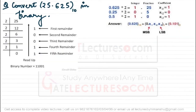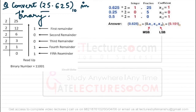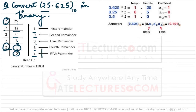Let us look at an example. Convert 25.625 to binary. First, look at the integral part 25. We divide it repeatedly by 2. Divide 25 by 2: quotient 12, remainder 1. Divide 12: quotient 6, remainder 0. Divide 6: quotient 3, remainder 0. Divide 3: quotient 1, remainder 1. Then 1 divided by 2: quotient 0, remainder 1. Reading from bottom to top, the binary equivalent of 25 is 11001.